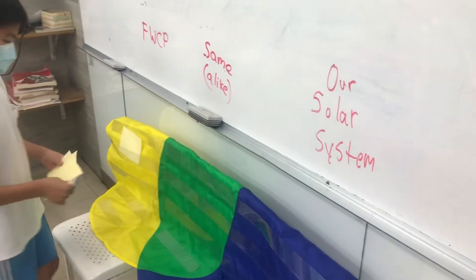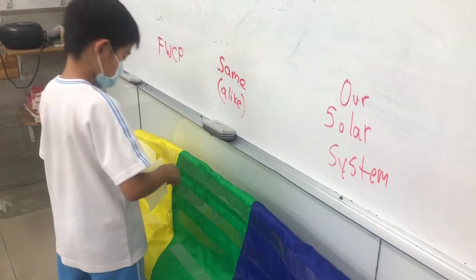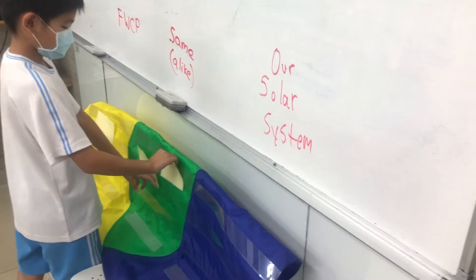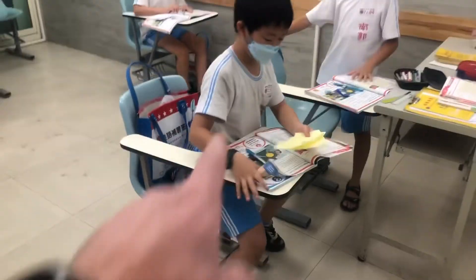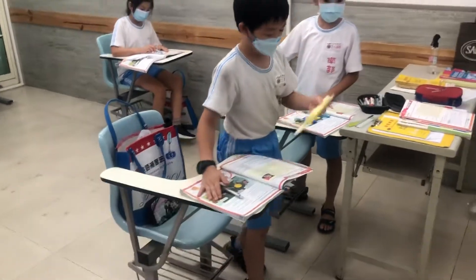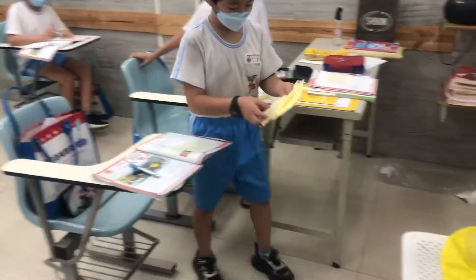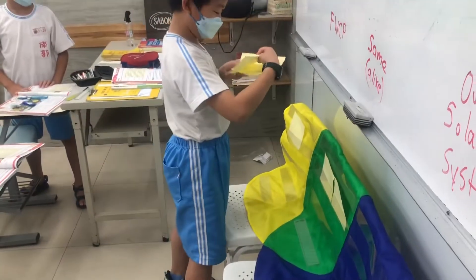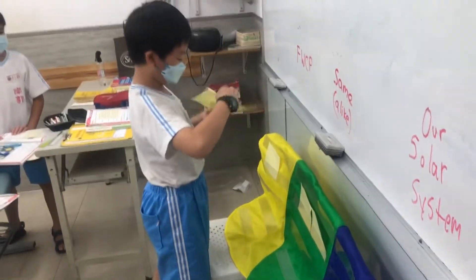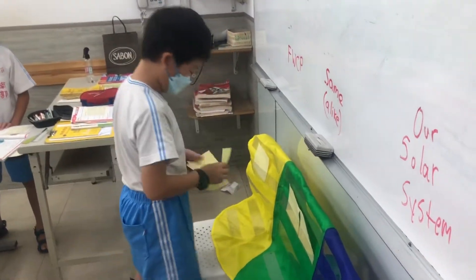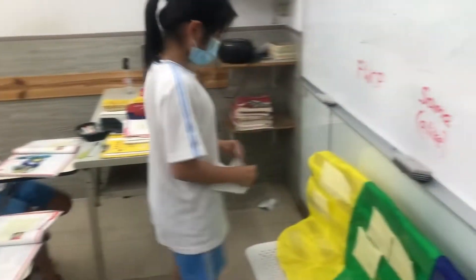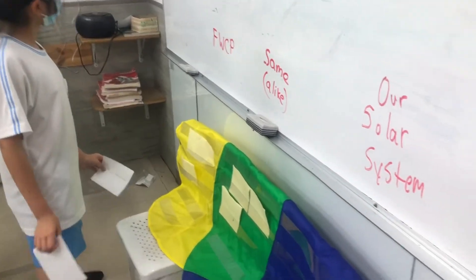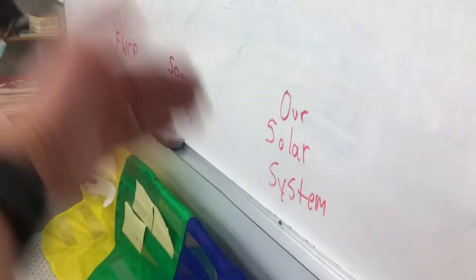Got one for the imaginary solar system, one for the same. All right, you want to come up? Go ahead, make sure you know where they go. You got two, that's fine. Do you know which category they go in?